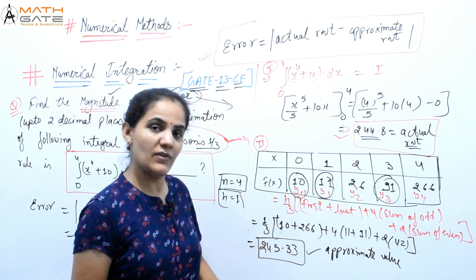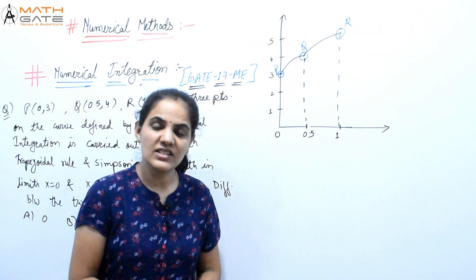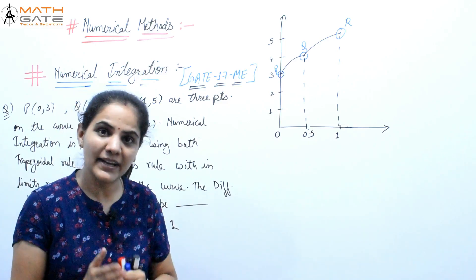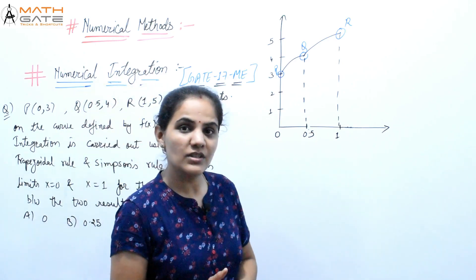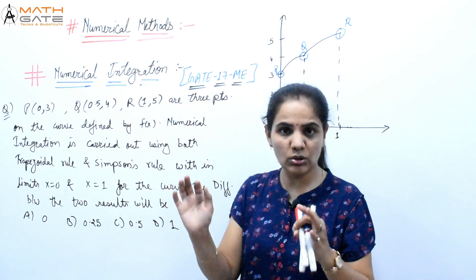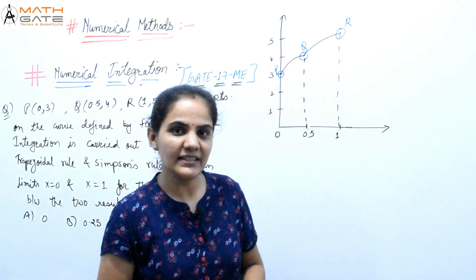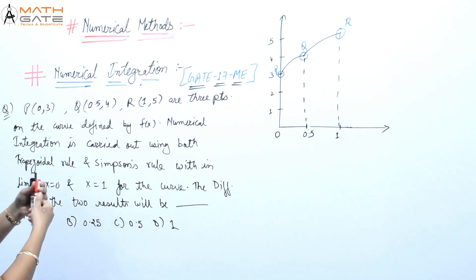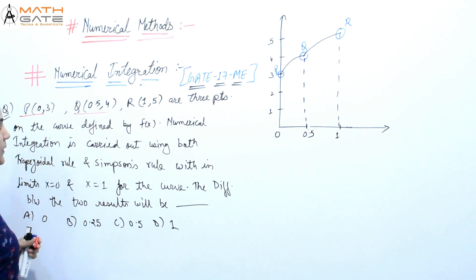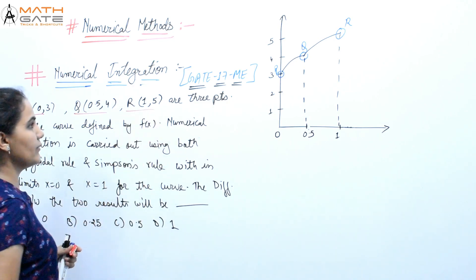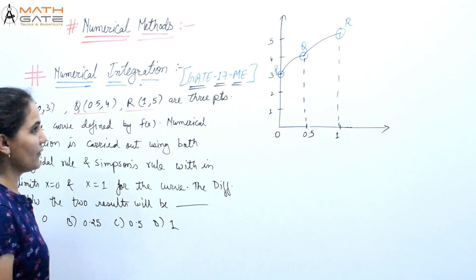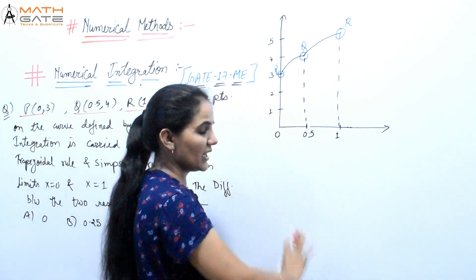So there are two differences here. Now let's discuss one more question which has been asked in GATE 2017 Mechanical branch. This question involves both Simpson's and Trapezoidal methods applied together. The question gives three points: P = (0, 3), Q = (0.5, 4), and R = (1, 5) — three points on a curve defined by f(x).